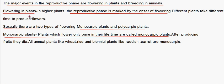Flowering in plants. In higher plants, the reproductive phase is marked by the onset of flowering. Different plants take different time to produce flowers. There are two types of flowering: monocarpic plants and polycarpic plants.